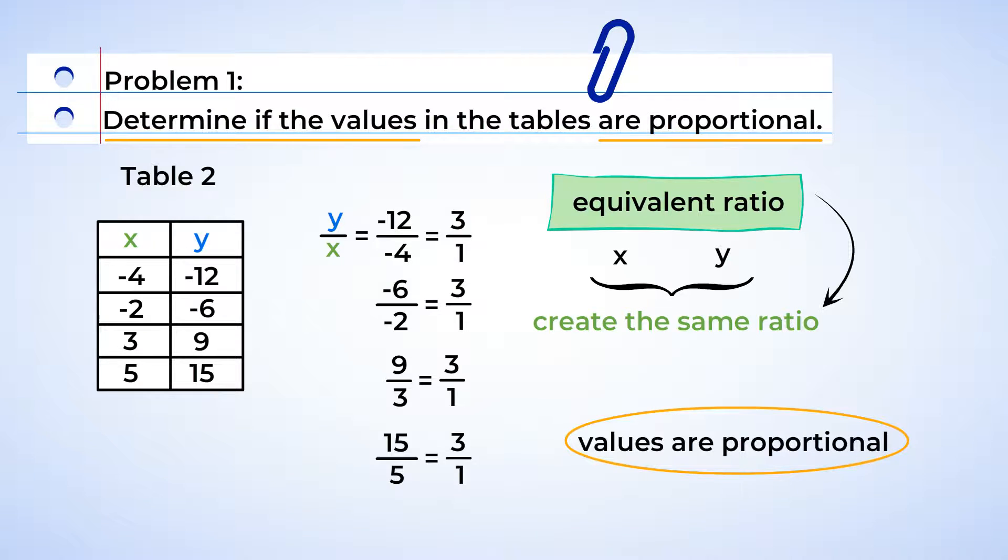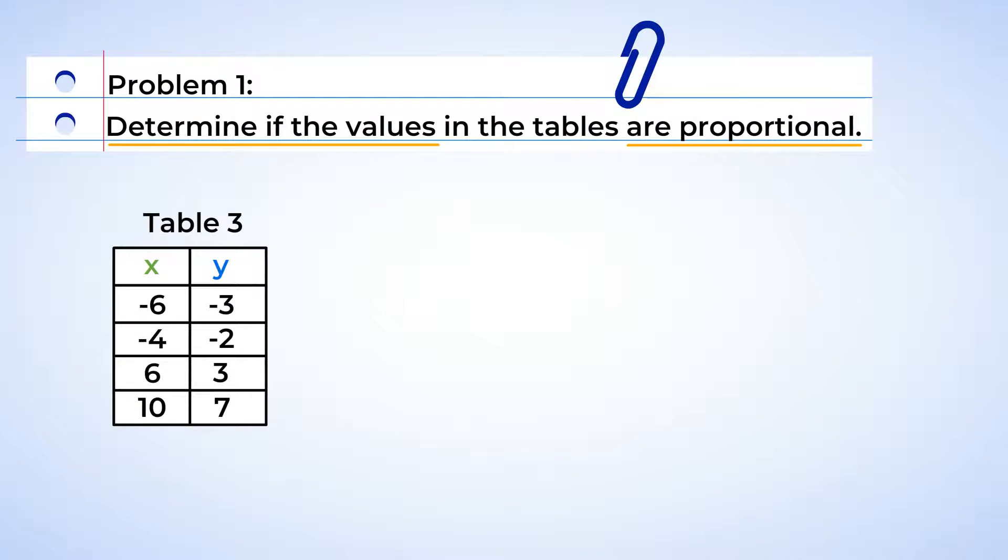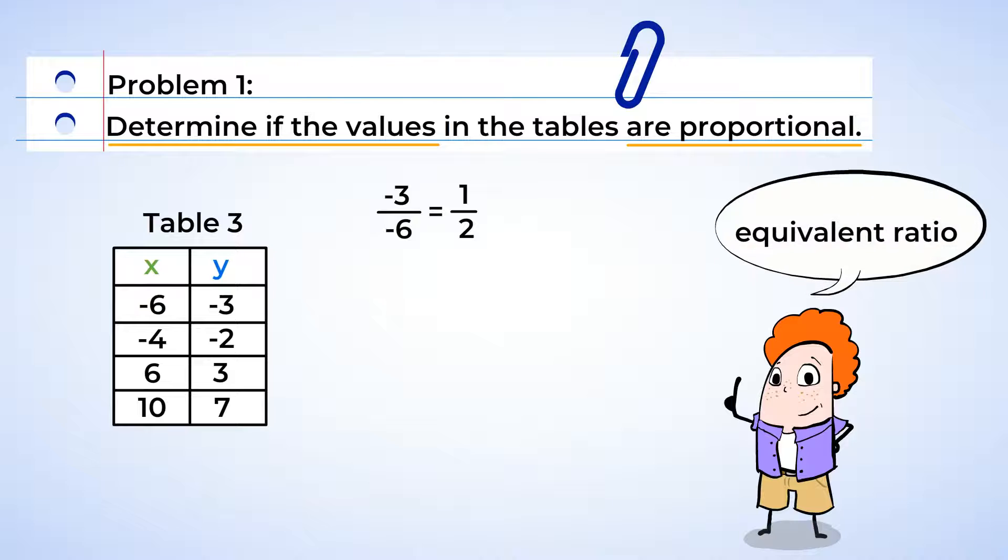Now we can look at the next table. We'll take the same steps with these values and create ratios. First row, negative 3 over negative 6 is equal to 1 half. If all of the values in the table have an equivalent ratio, then they are proportional. Let's keep going to find out. Negative 2 over negative 4 is equal to 1 half. 3 over 6 is also 1 half. Fantastic!